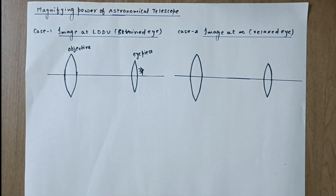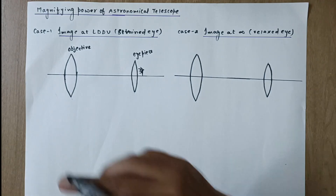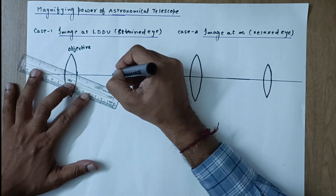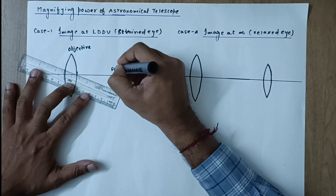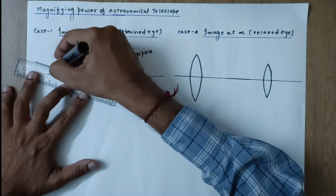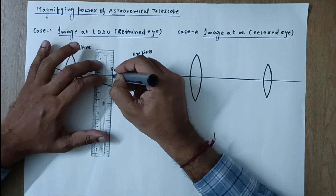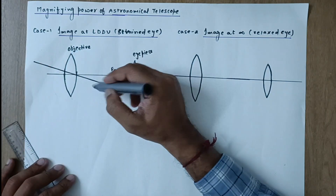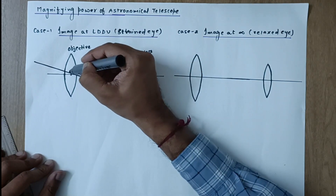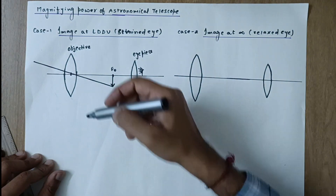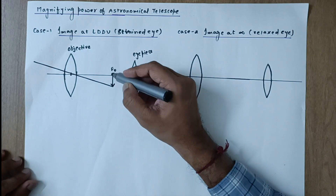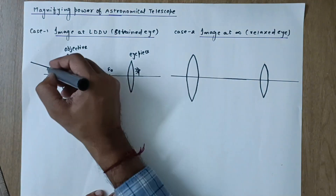Since the object is at infinity, the rays come parallel to each other but not parallel to the principal axis. This point is the focus of the objective, so the rays coming from infinity will form an image at the focal plane. One ray passing through the optical center is sufficient to understand this. All parallel rays will meet at the focal plane forming a single image. This angle is alpha.